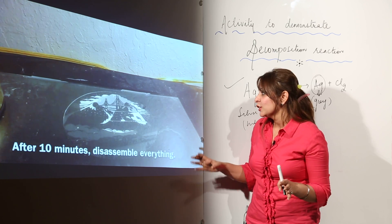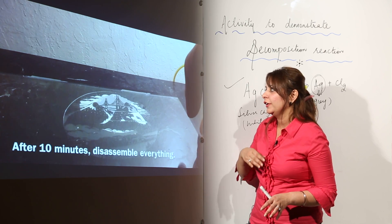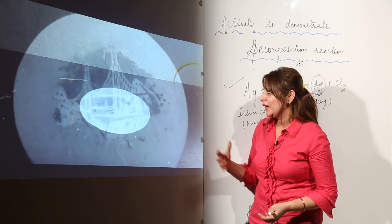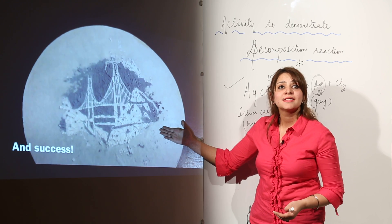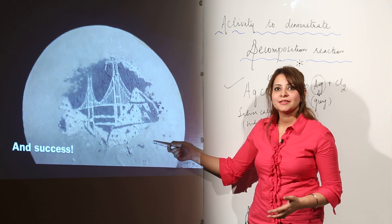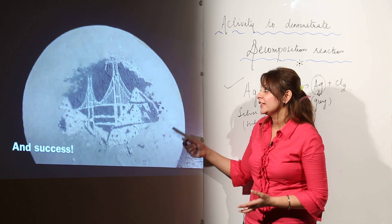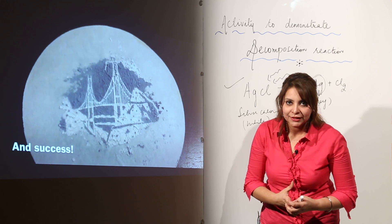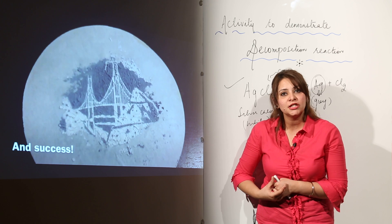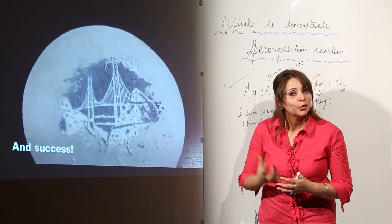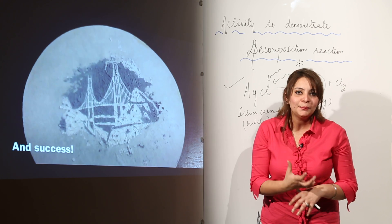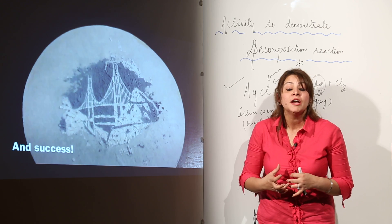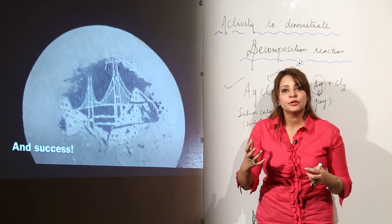After 10 minutes, we disassemble everything — remove the glass and the negative — and we are left with the filter paper. Looking at the filter paper, we can see a beautifully formed black and white picture on it. This is black and white photography produced as a result of the photolytic decomposition of AgCl. Whenever you store AgCl, you must do so carefully in colored bottles, keeping it away from light — whether sunlight or lamp light — to prevent photolytic decomposition.